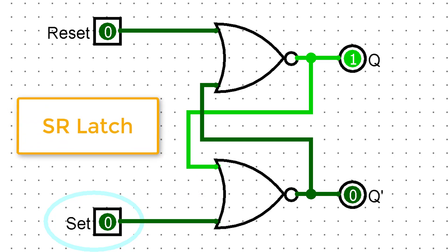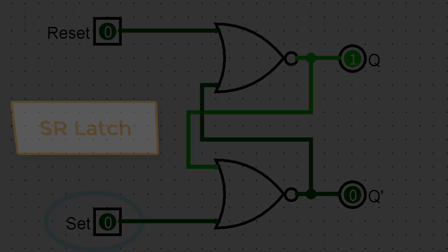An SR latch is the building block of static memory. You'll sometimes hear the term SRAM, meaning static random access memory. The static term here tells you that the RAM is built using a latch as its basis, as opposed to how DRAM works.